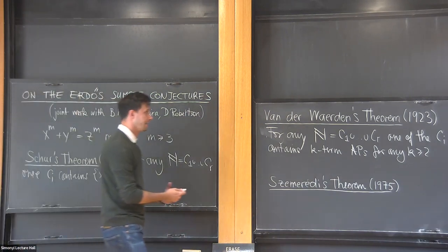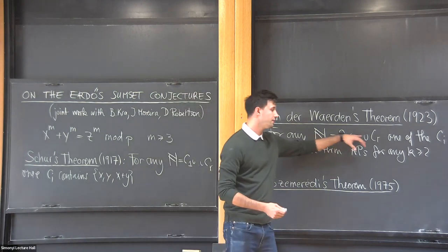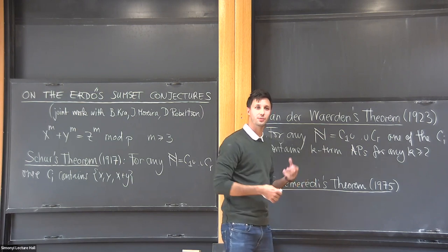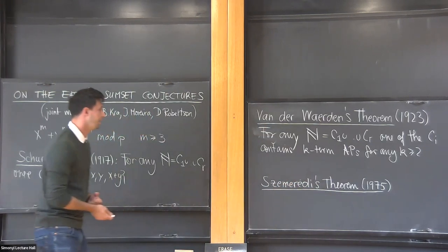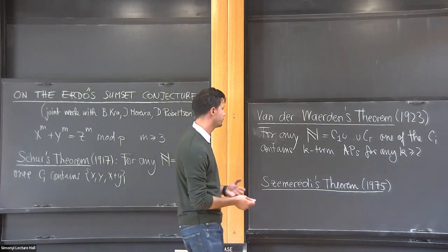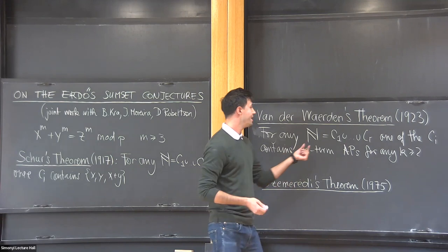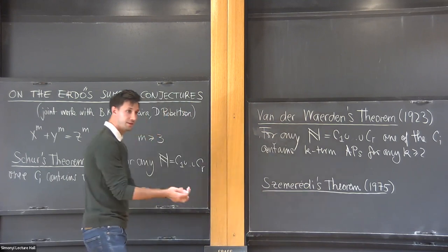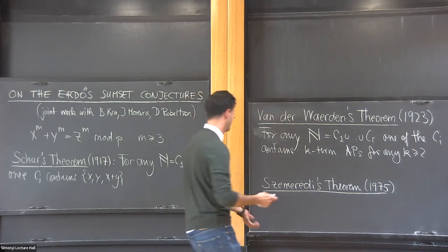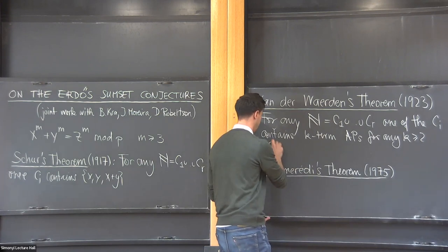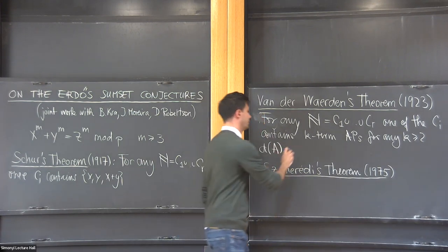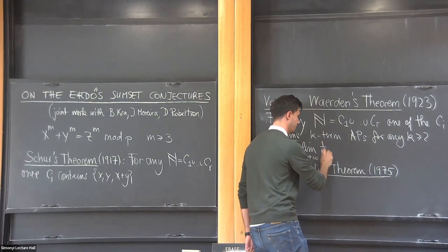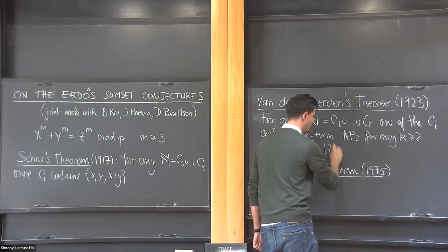One of the downsides of van der Waerden's theorem is that it tells you one of those colors contains these arithmetic arrangements but it doesn't tell you exactly which color. This motivated Turán and Erdős to come forth with the following conjecture. They said, well maybe one of those sets must have positive density, so maybe it's this set that contains this structure already. So let me tell you what density is. The density of a set is defined as the limit as n goes to infinity of the proportion that A occupies within the first n integers normalized.